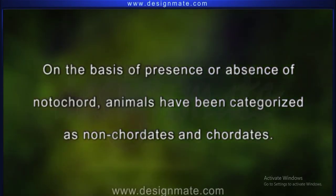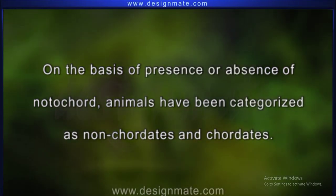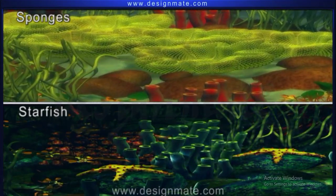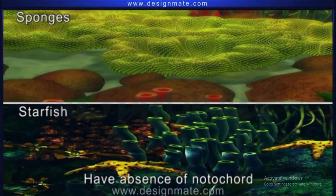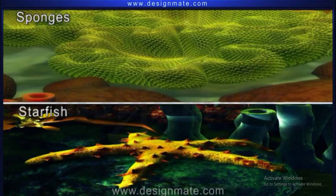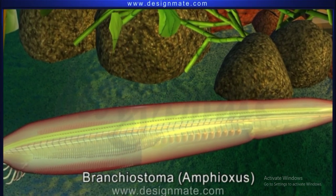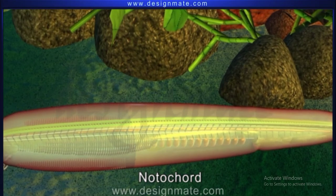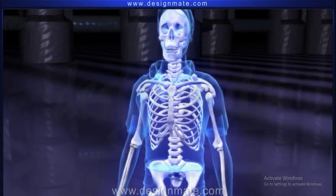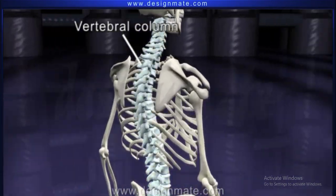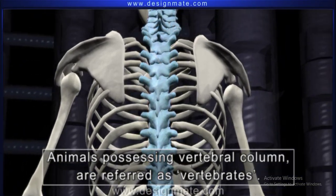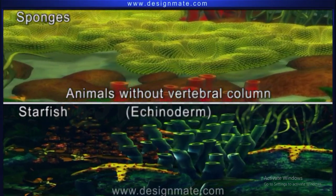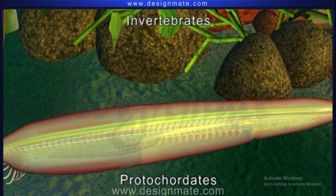Summary: On the basis of presence or absence of notochord, animals have been categorized as non-chordates and chordates. The non-chordates include animals like sponges and starfish which have absence of notochord throughout their life cycle. The chordates include animals like Branchiostoma or amphioxus which have presence of notochord throughout their life. In animals like human beings, the notochord is replaced in adult animals by a vertebral column. Such animals are referred to as vertebrates, while animals without a vertebral column, like sponges, echinoderms and proto-chordates, are referred to as invertebrates.